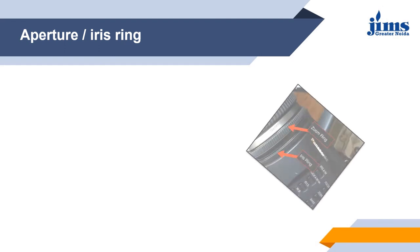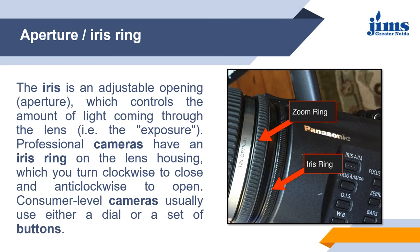The iris is an adjustable opening, or aperture, which controls the amount of light coming through the lens — that is, the exposure. Professional cameras have an iris ring on the lens housing which you can turn clockwise to close and anticlockwise to open the aperture. Consumer-level cameras usually use either a dial or a set of buttons to set the aperture. Only professional cameras have an iris ring on the lens.